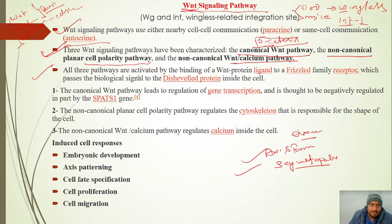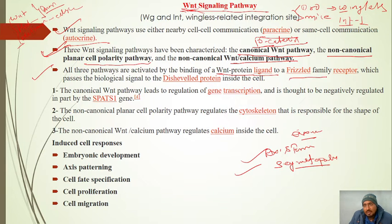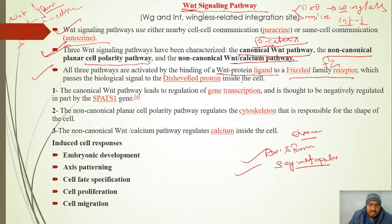All three pathways are activated by binding of the WNT ligand to a Frizzled family receptor. The Frizzled (FZ) receptor then pushes the biological signal to a Dishevelled protein inside the cell.